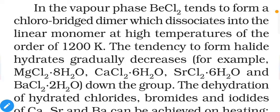In the vapor phase, BeCl₂ tends to form a chloro-bridged dimer, which dissociates into the linear monomer at high temperatures of around 1200 K. A dimer means two units attached together; BeCl₂ acts as the monomer (single unit), and when two BeCl₂ units attach together it is called a dimer.